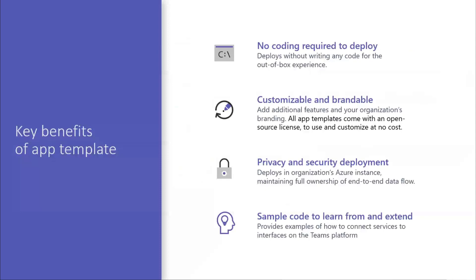Some of the benefits of app templates: first, if it already meets your requirement, there's no coding required — you can just click deploy. We have great documentation available so you can quickly deploy within 30 to 60 minutes. Second, if you're a system integrator or independent software vendor, you can customize and brand it to your organization and sell it as IP to customers. Third is privacy and data residency — customers are worried about where data resides, and since this app template is deployed to your Azure instance, data doesn't move out of premises. IT admins have complete control and can look at audit logs and insights. Finally, the sample code can be used as a reference for learning how to build Teams apps — fork it and get your hands dirty.